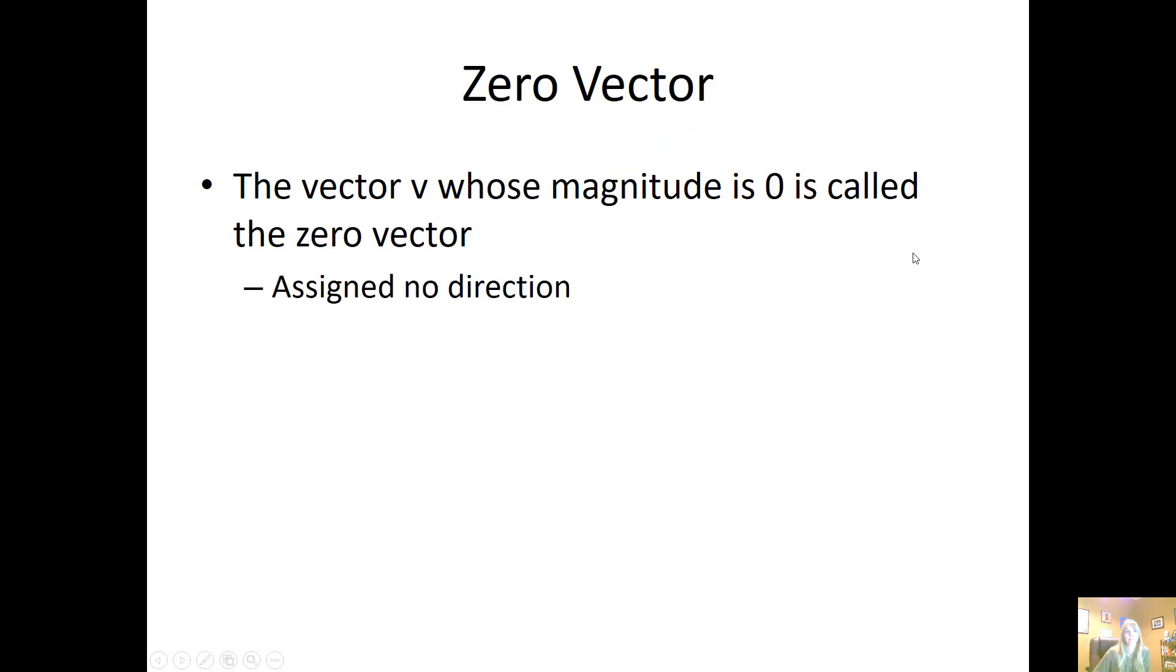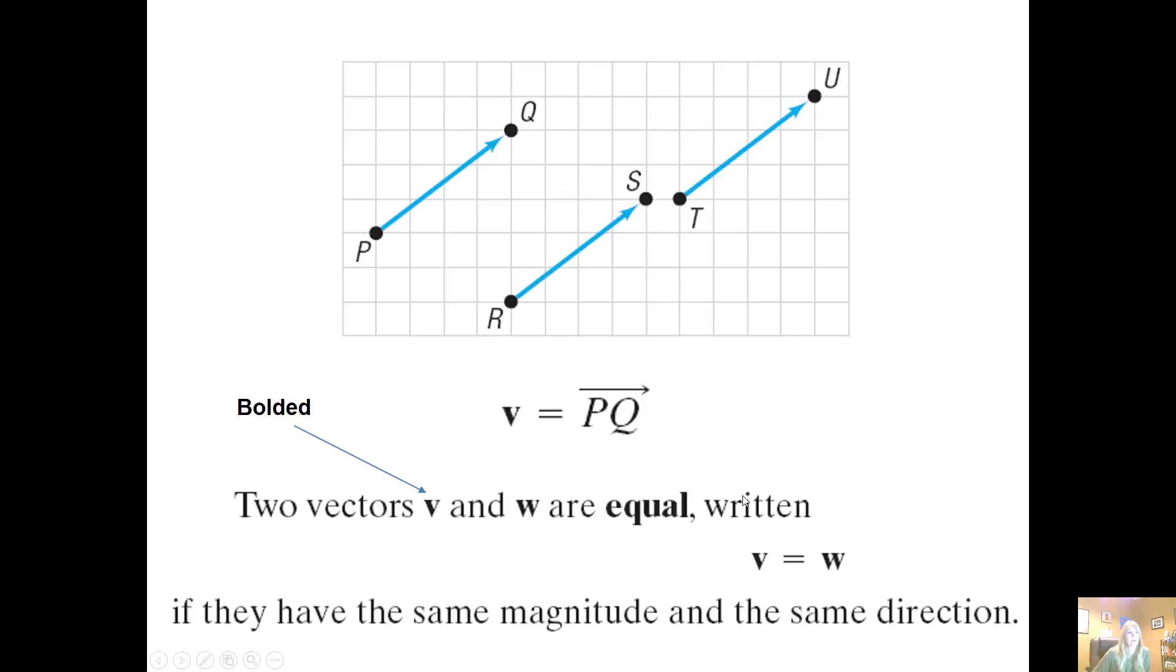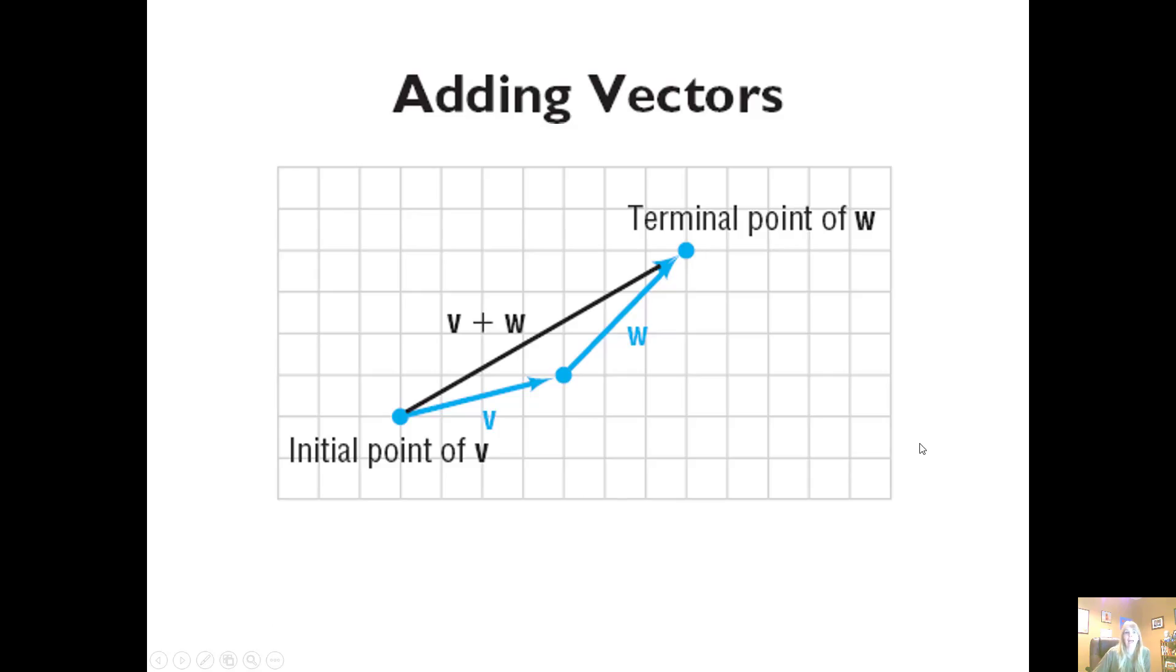The vector v whose magnitude is zero is called the zero vector and is assigned no direction. Typically you'll either see an arrow written above a vector or they'll be bolded. Two vectors are equal if they have the same magnitude—the length of the lines are the same—and the same direction.